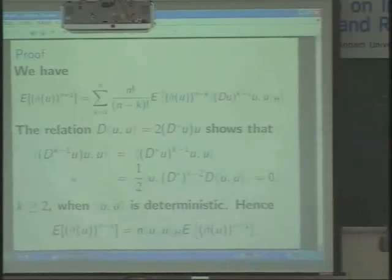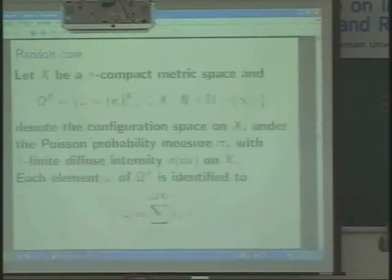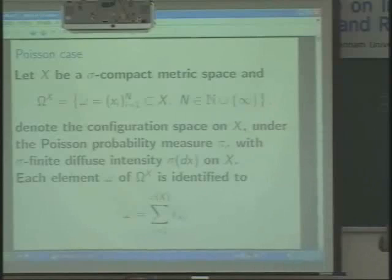So that is the Gaussian case. Now what I want to do is look at the Poisson case using this kind of method. For random rotations we have this result. Now I want to look at the Poisson case and use the same type of method — that means Skorokhod integral and moment identities.